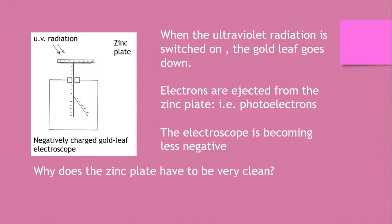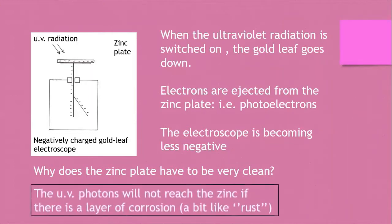It's an interesting question that sometimes comes up in exams: why does the zinc plate have to be very clean? The photons won't reach the zinc metal surface itself if there's a layer of corrosion — a bit like a layer of rust.